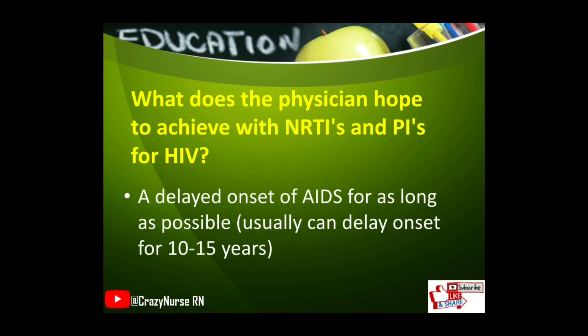NRTIs and PIs delay the onset of AIDS for as long as possible — usually 10 to 15 years.